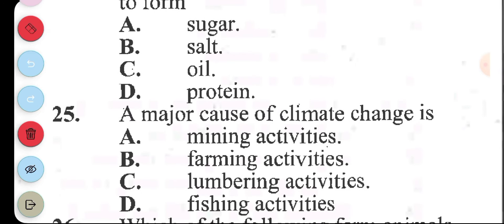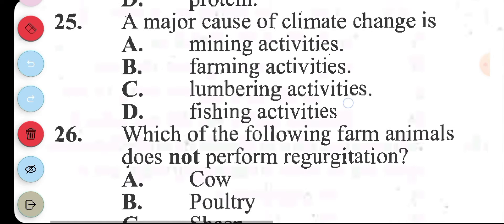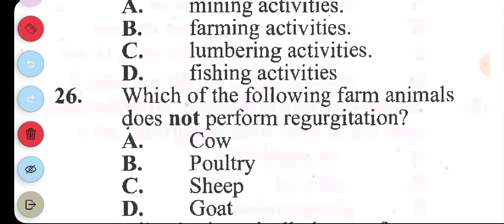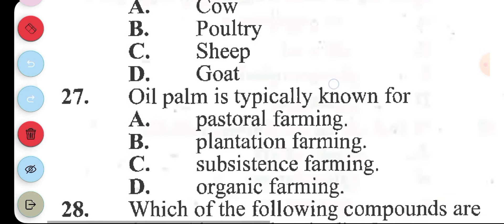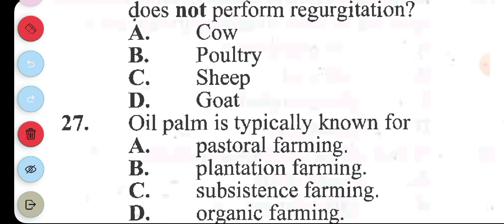Question 25: a major cause of climate change is A, mining activities. B, farming activities. C, lumbering activities. D, fishing activities. The answer to question 25 is C, lumbering activities, cutting out of trees. Question 26: the following farm animals does not perform regurgitation. A, cow. B, poultry. C, sheep. D, goats. Regurgitation is where the animal brings the food back from the stomach and then chews it. It's common amongst ruminants or polygastrics. Poultry is monogastric, therefore it does not regurgitate. Question 27: oil palm is typically known for A, pastoral farming. B, plantation farming. C, subsistence farming. D, organic farming. The answer to question 27 is B, plantation farming.